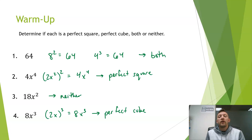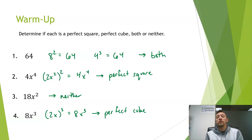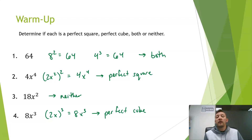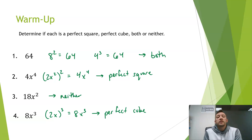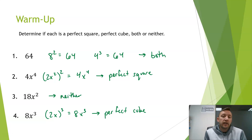All right, let's see how you did. For this first one, 64 is both a perfect square and a perfect cube, because if you square 8, you get 64, and if you cube 4, you get 64. However, 4x to the fourth is just a perfect square, because if we square 2x squared, 2 squared is 4, and multiplying the exponents gives us x to the fourth. There's nothing we could cube to get 4, so it's just a perfect square. 18x squared — there's nothing you could square to get 18, so it's neither a perfect square nor a perfect cube.